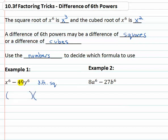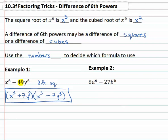The difference of squares factors to the sum and difference of the square roots. The square root of x to the sixth is x cubed — square root divides the exponent by two. The square root of forty-nine y to the sixth is seven y cubed: square root of forty-nine is seven, and the square root of y to the sixth is y cubed. So our final factored form is x cubed plus seven y cubed, times x cubed minus seven y cubed.